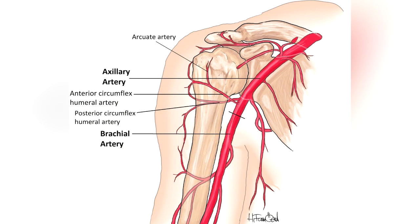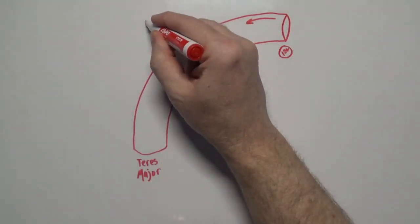the name of the vessel changes to brachial artery after it passes the lower border of the teres major muscle. Sometimes, some people like to say the name changes to brachial artery where the subscapular artery branches off. Others like to use the anterior and posterior humeral circumflex as the lower boundary,